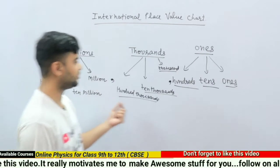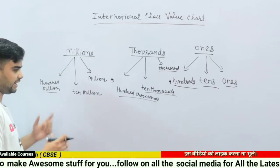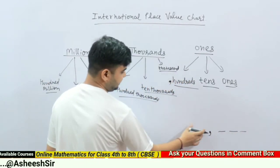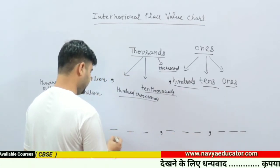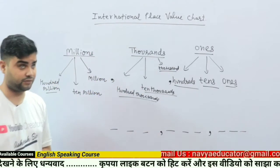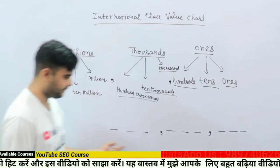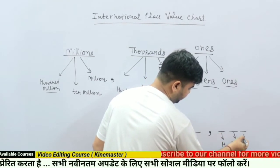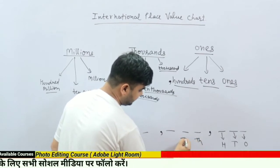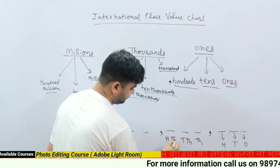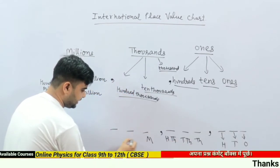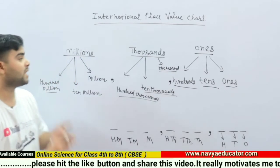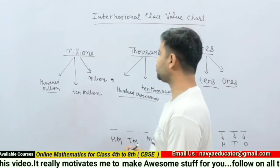Here is the chart of the international place value. Whenever you see a number, it is divided in this pattern: three digits, then a comma, three digits, then a comma, three digits, then a comma. This system is called the international place value chart. Every number has a different place value: ones, tens, hundreds, thousands, ten thousands, hundred thousands, million, ten million, and hundred million. The international place value chart is different from, but easier than, the Indian place value chart.